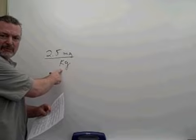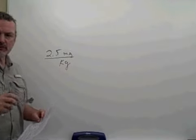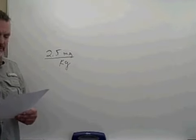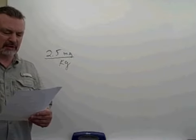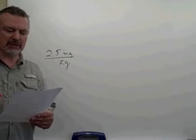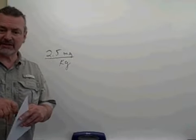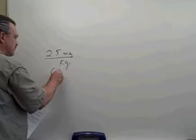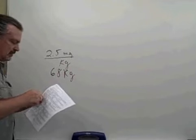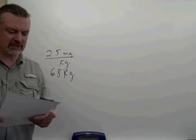So for every kilogram of the patient's weight, they need to receive 2.5 milligrams of the drug. The order for a drug is 2.5 milligrams per kilogram of a patient's body weight for a patient weighing 68 kilograms. So we have a patient that weighs 68 kilograms.